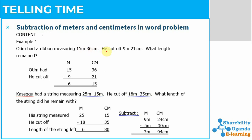Example: A team had a ribbon measuring fifteen meters and thirty-six centimeters. He cuts off nine meters and twenty-one centimeters. What length did he remain with? He had a total of fifteen meters and thirty-six centimeters. Cutting off means reducing it. So we subtract: thirty-six minus twenty-one gives fifteen, and fifteen minus nine gives six. The answer is six meters and fifteen centimeters.